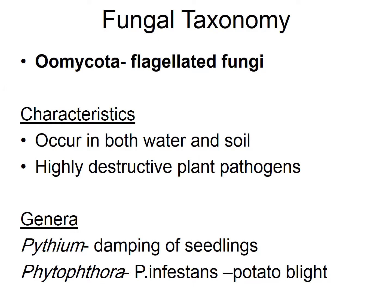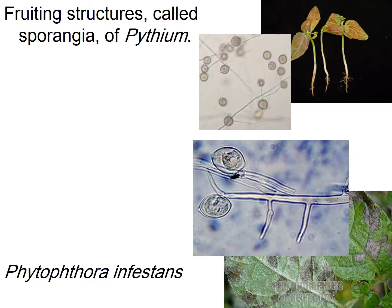Now we will talk about the taxonomy and major groups of fungi. We start with the Oomycota — the oomycetes, or flagellated fungi. They can be found in water environments or soil environments, and members of this family are highly destructive pathogens for plants. Examples include Pythium, which causes damping-off of seedlings, and Phytophthora — such as Phytophthora infestans, which causes potato blight. The pictures here show the sporangia and structure of these fungi, and how seedlings become wilted and die, while potato leaves become blighted with reduced photosynthetic ability.